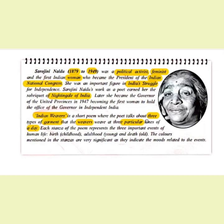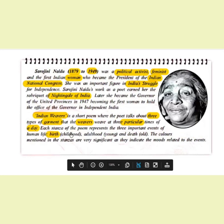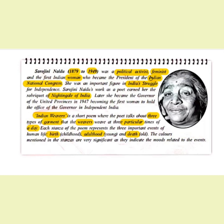These times of day represent important events in our human life — the important stages we pass through. We will discuss three different stages of life: birth, adulthood, and death. Every human being passes through these three stages — childhood, young adulthood, and old age. Very importantly, each stanza mentions different colors, and those colors indicate the different moods that our life goes through.